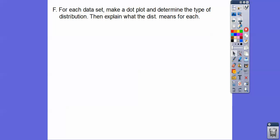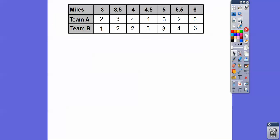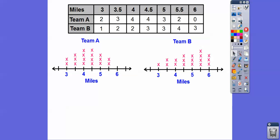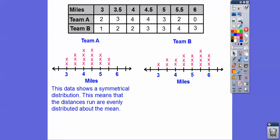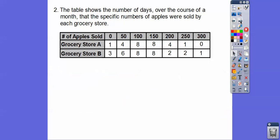For each data set, make a dot plot and determine the type of distribution — which way is it skewed — then explain what the distribution means. Here we have the number of miles run by members of two track teams during a day. Track team A has two people who ran 3 miles, three who ran 3.5, and so on. Looking at the dot plot, team A is nice and symmetrical — four on each side, three and three, two and two — so team A's distances are evenly distributed about the mean. Team B has more values on one side, so it's skewed to the left, meaning more than half the team members ran a distance greater than the mean.